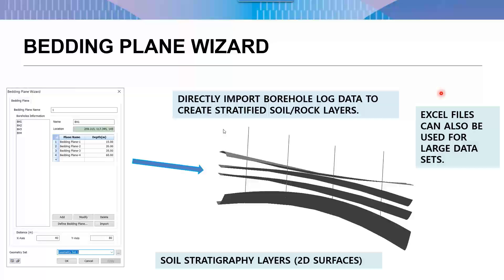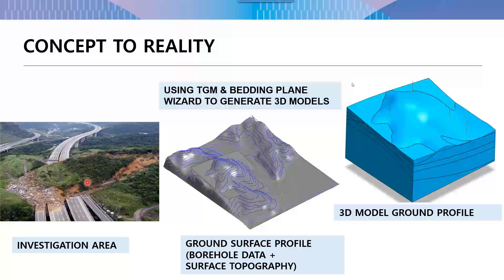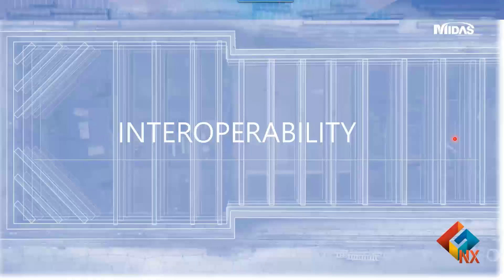After ground topography is developed in GTS NX, the next step is creating borehole layers using the bedding plane wizard. You simply input the layer depths and get your borehole distribution. Taking a concept and mapping the necessary area, then using the software's automation features, you can produce a comprehensive 3D model of the soil stratigraphy.